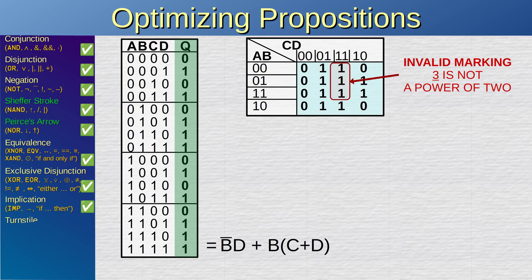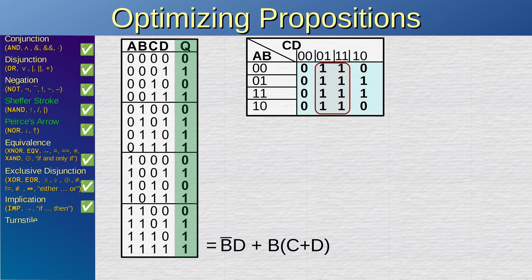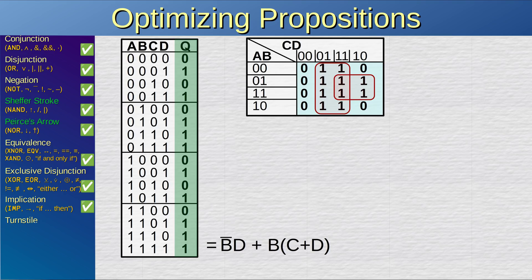The aim is to mark as big rectangles as you can, as long as there are no zeros under them. In this case, we can get a big 2-by-4 rectangle in the middle of the map. Then we can get another — this is fine, but we can actually do better. It does not matter if the markings overlap; overlaps are absolutely fine. What you want is a minimal number of rectangles that encompasses all of the ones in the map, with those rectangles as big as possible.